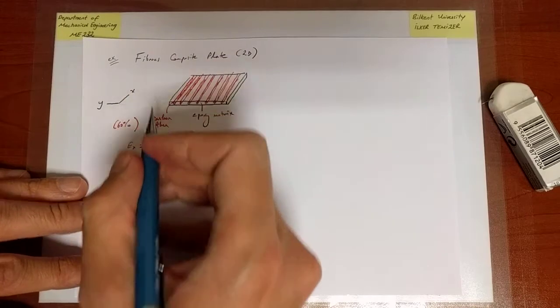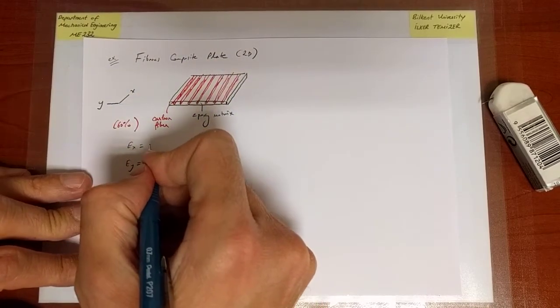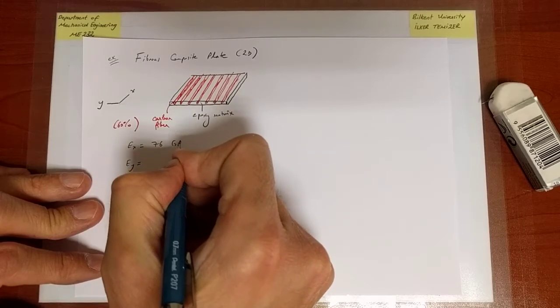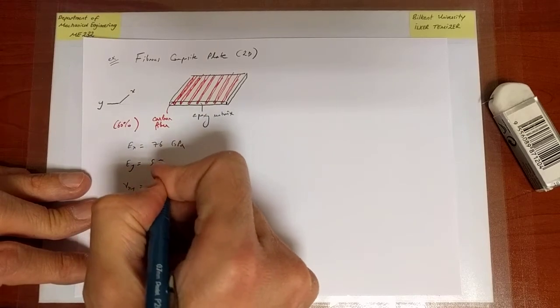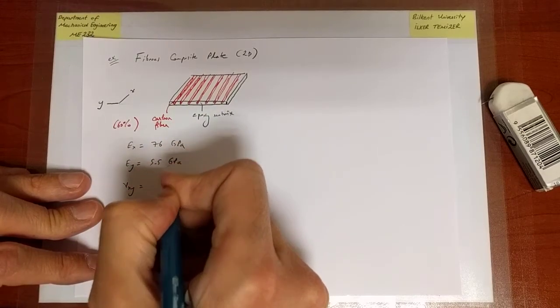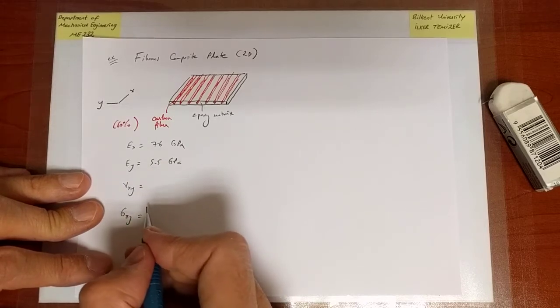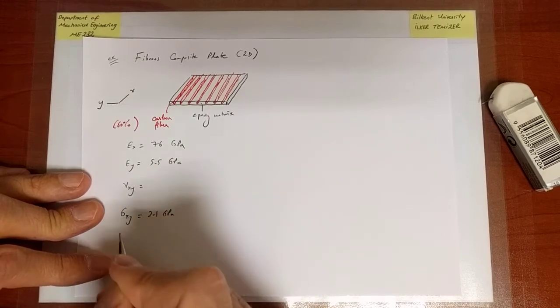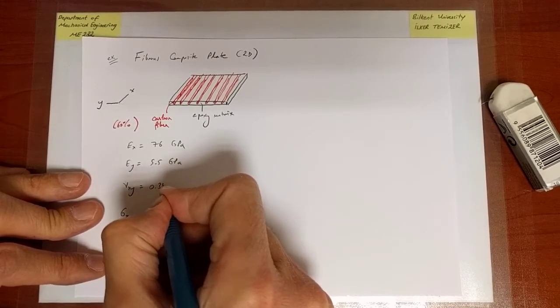Along the x direction where the fibers run along, I expect a higher Young's modulus and that is indeed the case, 76 GPa, and Ey is much smaller with a value closer to the Young's modulus of the epoxy matrix. The shear modulus is 2.1 GPa and the Poisson ratio nu_xy is provided as 0.34.